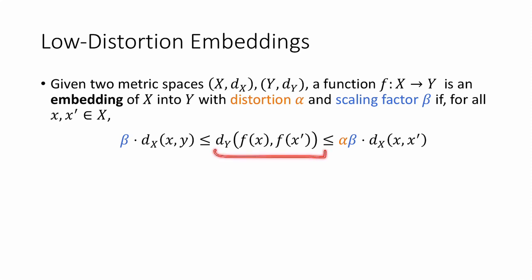the distance in Y between their images, f(x) and f(x'), is reasonably close to their original distance in X. More precisely, it's sandwiched between their original distance in X times the scaling factor β and that same scaled distance times some additional fudge factor α: β · d_X(x, x') ≤ d_Y(f(x), f(x')) ≤ α·β · d_X(x, x'). And this fudge factor α is called the distortion.